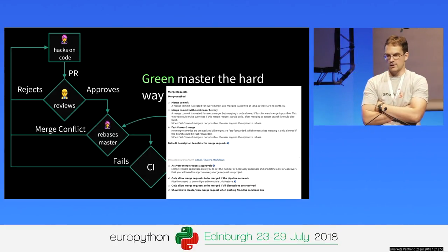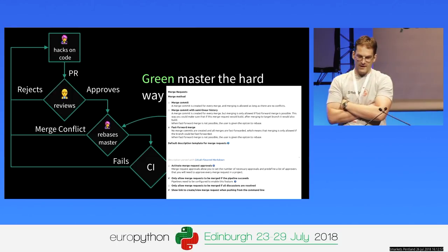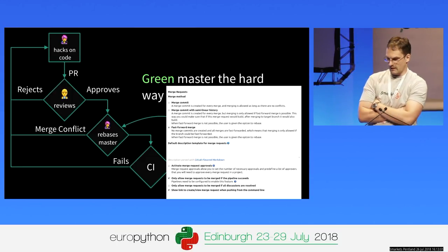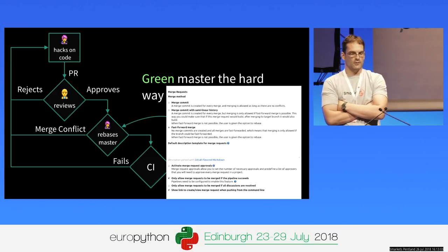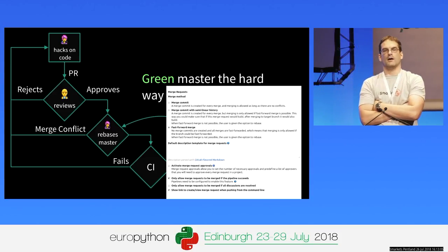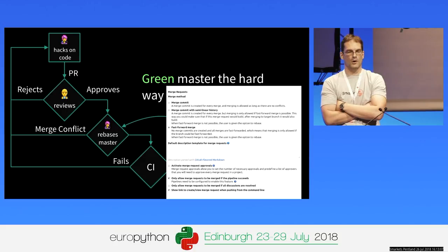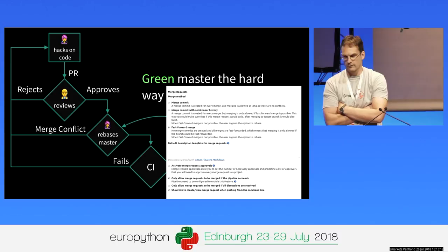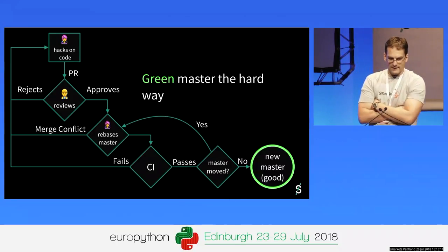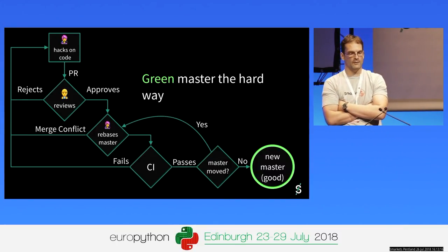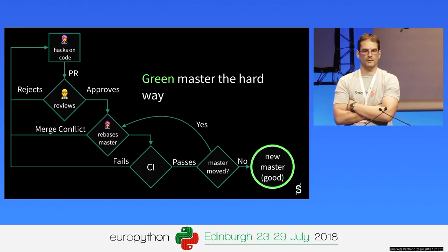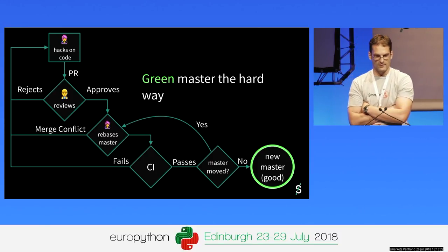It turns out there is a way to fix this with GitLab out of the box without any other tooling. You need to configure GitLab so that you only allow merge requests to be merged if they pass CI, and you insist that it needs to be a fast-forward merge. The effect this has is that the new master will always be what you tested in CI, which is what you want — you don't want to merge something into master if it hasn't been properly tested.